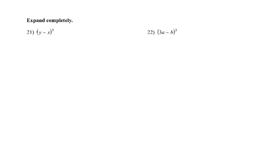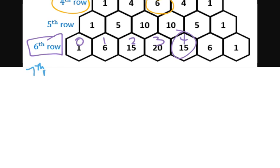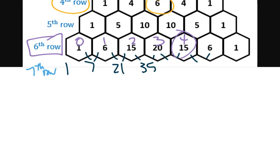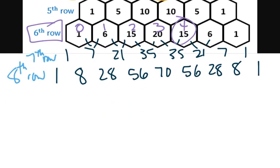Row eight, term seven. If the row's not finished we can just continue on with it. So the seventh row starts out one, seven, twenty-one, thirty-five, thirty-five, twenty-one, seven, one. Then the eighth row: one, eight, twenty-eight, fifty-six, seventy, fifty-six, twenty-eight, eight, one. Row eight, then count term zero, one, two, three, four, five, six, and seven — so it would be eight.